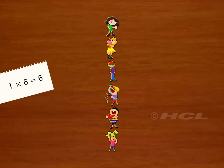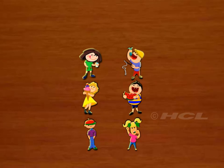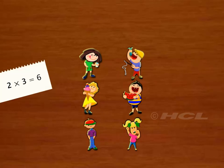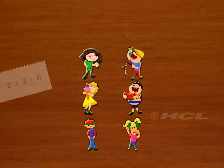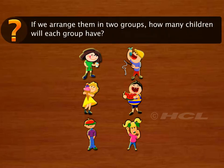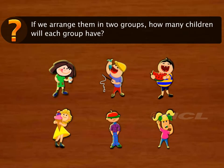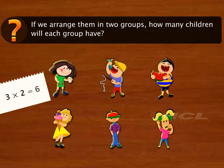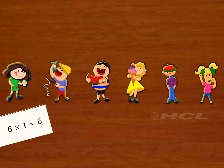We can have six groups of one child each. We can also arrange them in three groups of two children each. If we arrange them in two groups, each group will have three children.